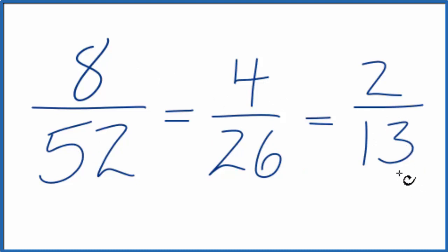you would get the same value. This is Dr. B simplifying 8 over 52. The simplified value is 2 thirteenths. Thanks for watching.